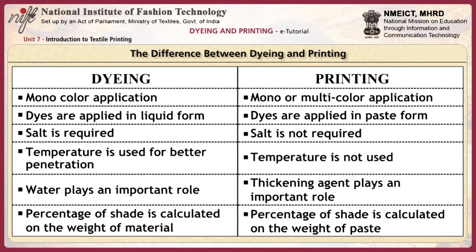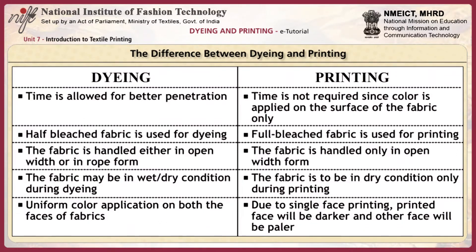In dyeing, temperature is used for better penetration, but in printing, temperature is not used. Water plays an important role in dyeing, but in printing, thickening agents play an important role. In the dyeing process, percentage of shade is calculated on the weight of the material, but in printing, it is calculated on the weight of the paste. In dyeing, time is allowed for better penetration, whereas in printing, time is not required since color is applied only on the surface of the fabric. Half-bleached fabric is used in dyeing, but full-bleached fabric is used in printing.